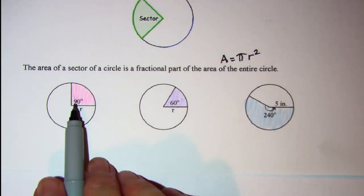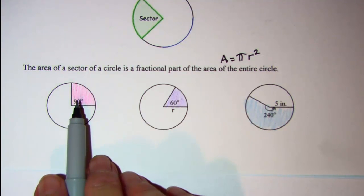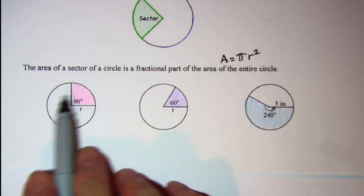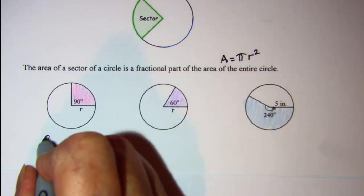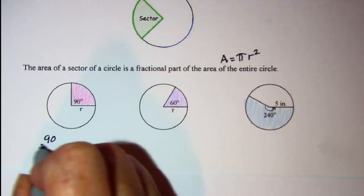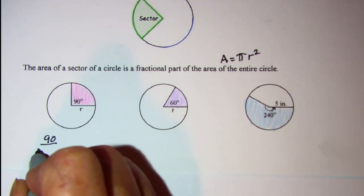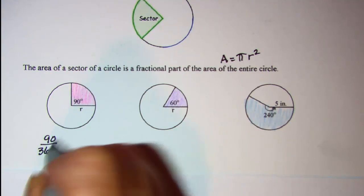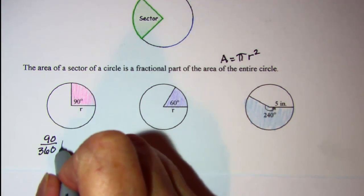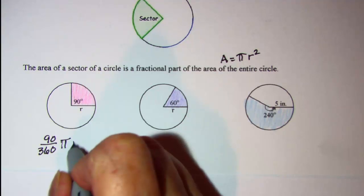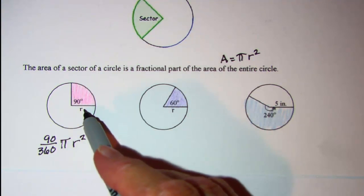So in this problem, since my sector has a central angle that measures 90 degrees, I know that there's 360 degrees in the entire circle. So the area of the pink shaded part is 90 over 360. This represents the fraction and then times pi r squared, since my radius is r.